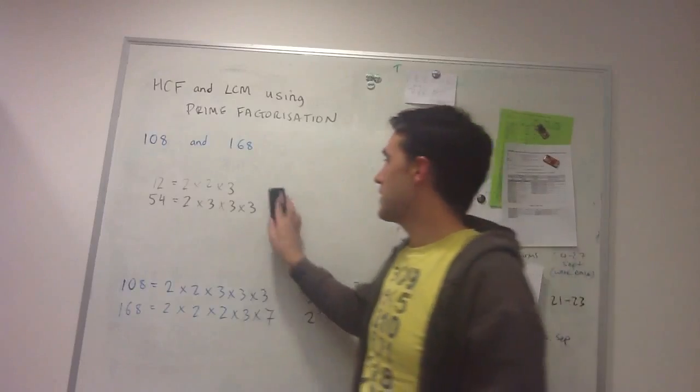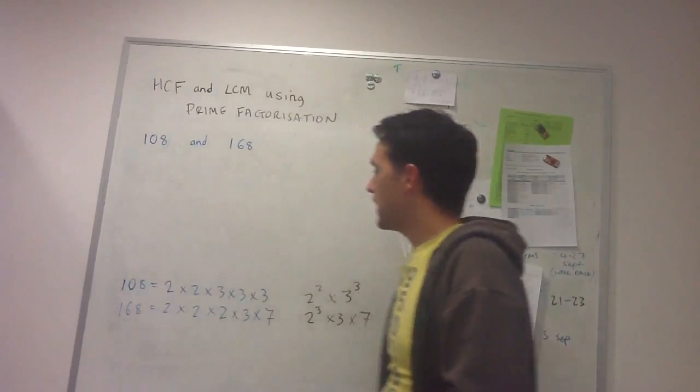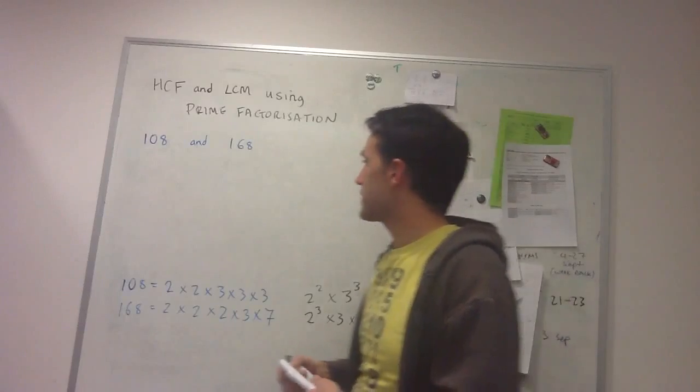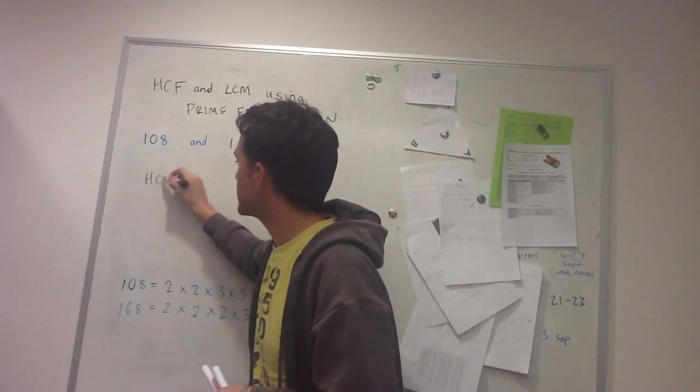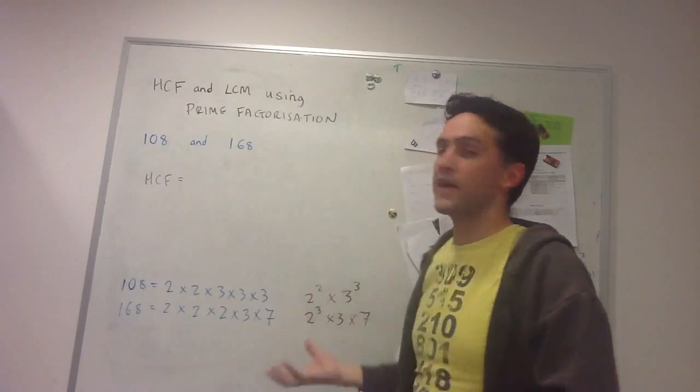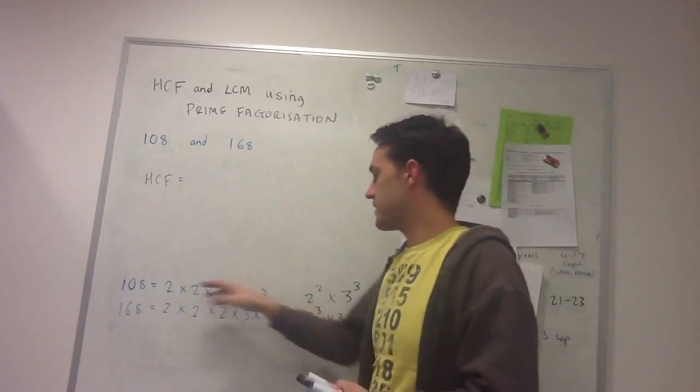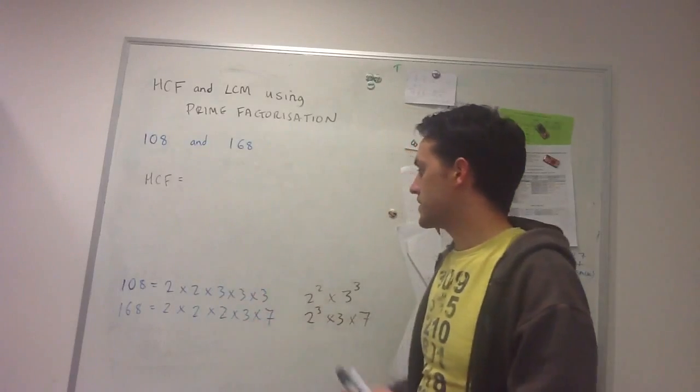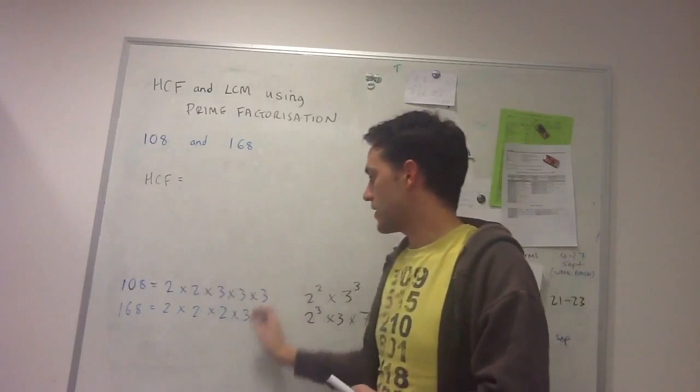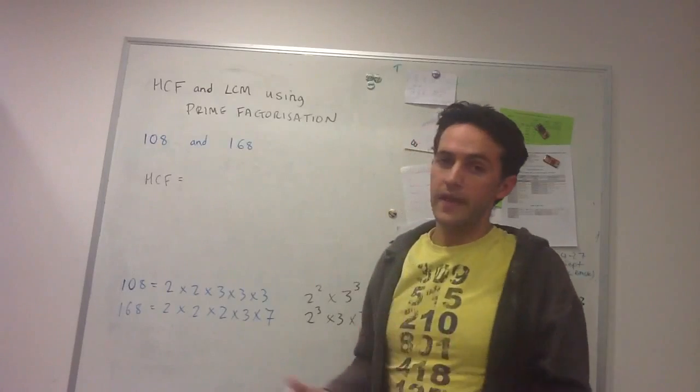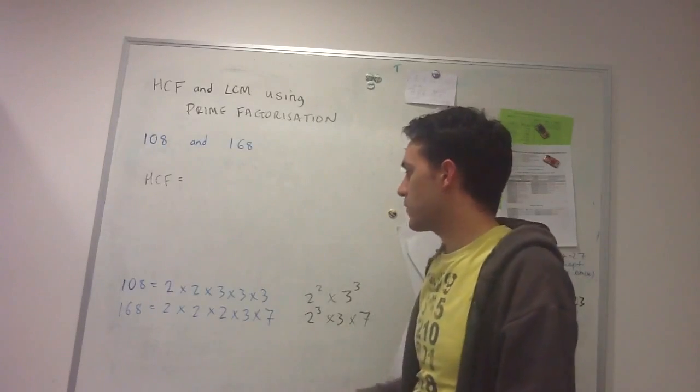So I use that fact in order to say, okay, so the highest common factor of these two numbers needs to have a prime factorization that's present in both of these numbers. To be a factor of both of these numbers, its prime factorization has to be all here. So what we do - I mean the upshot of all this - is we can make pairs.